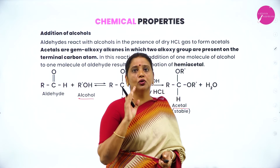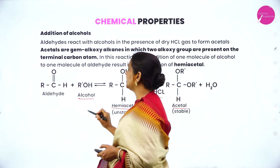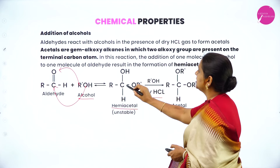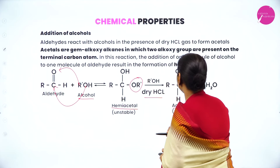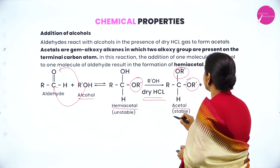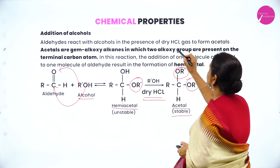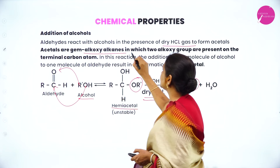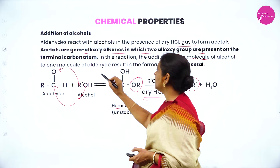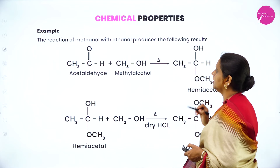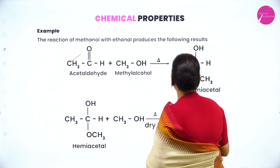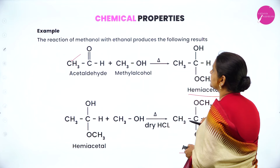Aldehydes also react with alcohol. When they react with monohydric alcohol, they form hemiacetal. When one more molecule of alcohol is added in the presence of dry HCl, acetal is formed. So aldehyde reacts with two molecules of monohydric alcohol: in the first step, R' adds to oxygen and OH adds to carbon giving hemiacetal; with another molecule of alcohol in the presence of dry HCl, two OR' groups are introduced giving acetal. Acetals are gem-dialkoxyalkanes with two alkoxy groups on the terminal carbon.